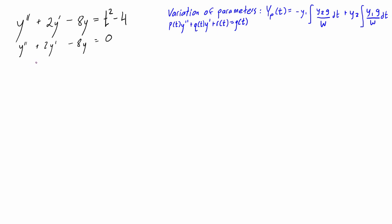From here we can write its characteristic equation, which is r² + 2r - 8 = 0. We can rearrange this as (r + 4)(r - 2) = 0, and then we can pick out that one root is positive 2 and another root is negative 4.